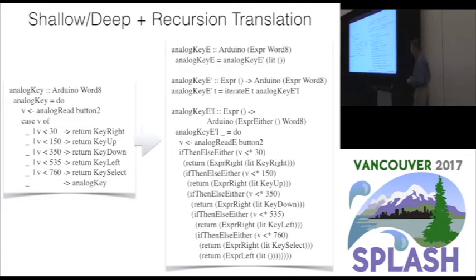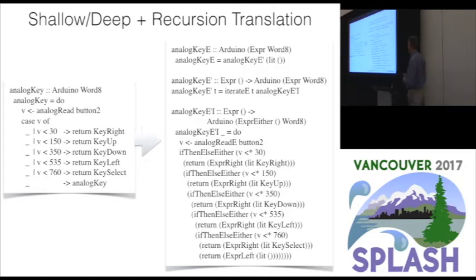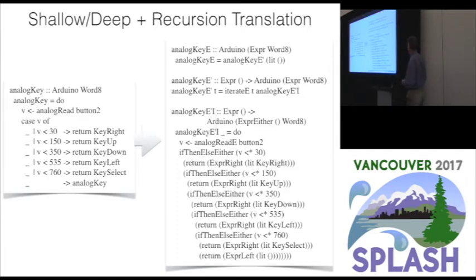Here's a more complicated example to demonstrate what we can do with the DSL going from shallow to deep. On the Arduino, there's a common shield with an LCD display and five buttons. The five buttons are encoded into an analog input — depending on the range of the analog input between zero and 1024, it tells you which button is pressed. We write that as a recursive function which either returns a key value depending on the analog input value, or calls itself recursively until a key press is found.